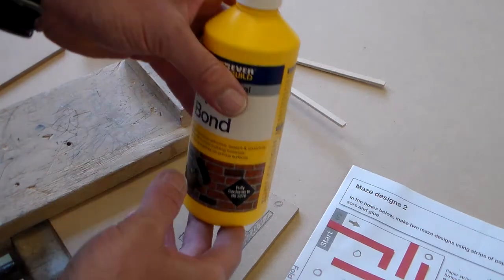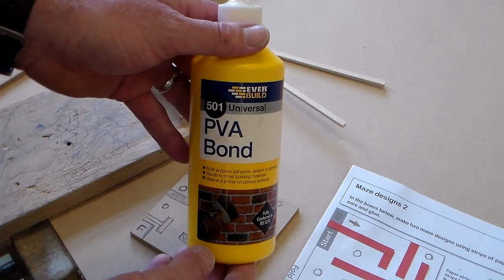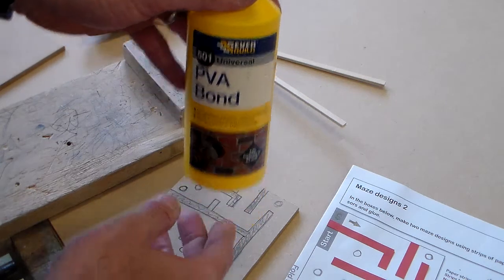The safety rules with the PVA glue, if you get this on your clothes, make sure you wash it off with water first.